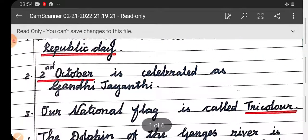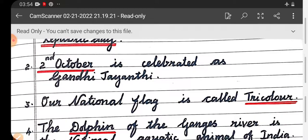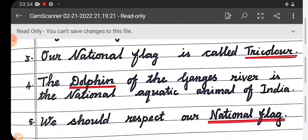Number two: Second October is celebrated as Gandhi Jayanti. Number three: Our national flag is called Tricolor.